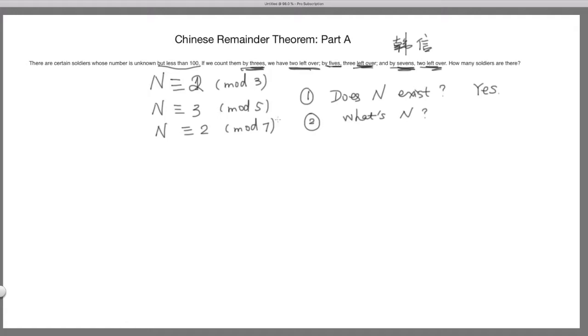It's not only for three, five, seven, it is true for any numbers that are coprime to each other. We're going to go into detail of that. So the answer is always yes. What's the n? Now actually, there are many n that exist. Here we're using less than 100 to limit there's only one solution.